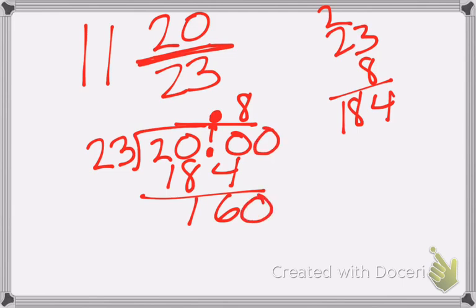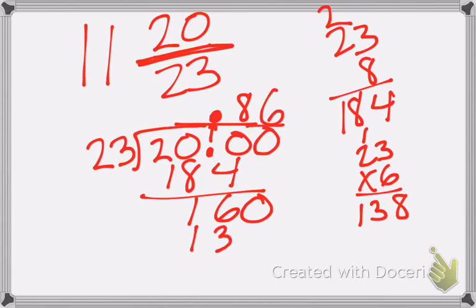I'm going to add another zero, bring it down so that now I'm trying to figure out how many times 23 goes into 160. Again, I'm using my estimation strategy. 23 is pretty close to 25, so I'm guessing that it's going to go into 166 times.